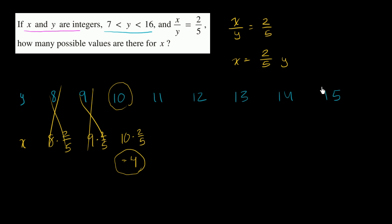And 15 is divisible by 5. None of these other ones are divisible by 5. So if y is 15, we don't even have to know what the value is, but we could say x is going to be 15 times 2 fifths, which is 15 divided by 5 is 3 times 2, which is 6. So there are two possible values. There are two possible values for x.